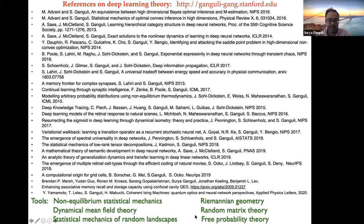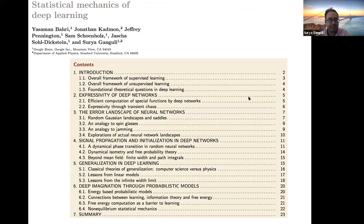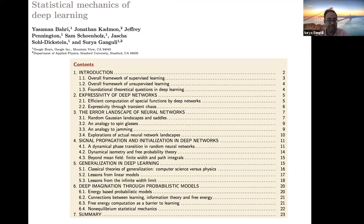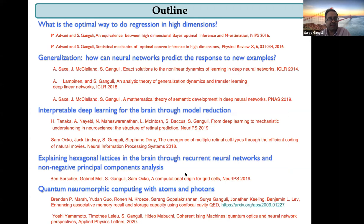I can't talk about all of this work, so I chose a selection. For a coherent overview of physics-based analyses of neural network theory, myself and my colleagues at Google wrote a review article discussing a variety of topics. This is the outline of the talk, and I may skip one of these as we go along.